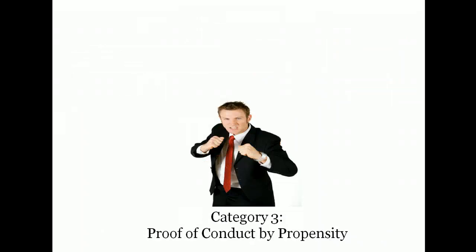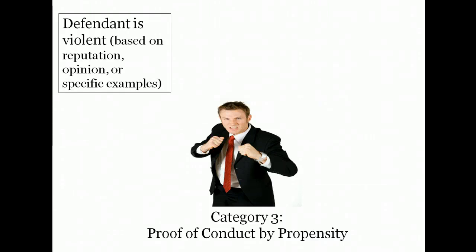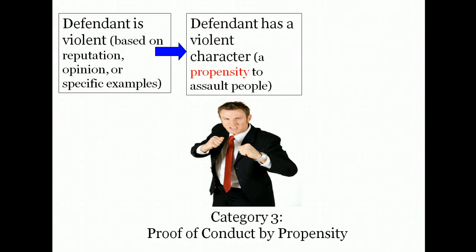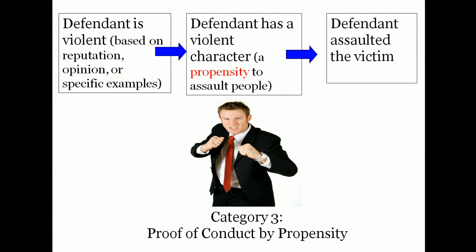Our third category is for proof of conduct by propensity. Let's say the defendant is charged with assault. The prosecution has evidence that the defendant is violent. This evidence could be in the form of a witness's opinion, a witness's description of the defendant's reputation for violence, or a witness's description of past examples of the defendant behaving violently. If that evidence is offered to suggest the defendant has a propensity to be violent and therefore it is more likely that the defendant assaulted the victim on this occasion, the prosecution is using a propensity inference. The prosecutor is saying our defendant has been violent in the past, and that makes it more likely he was violent on this particular occasion. This use of conduct to prove propensity is governed by Rule 404.